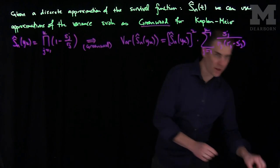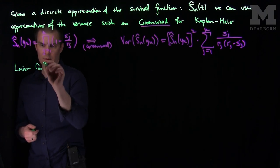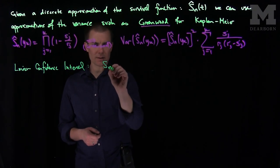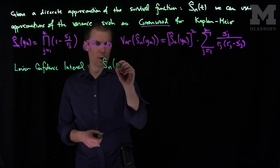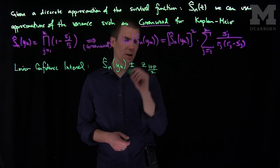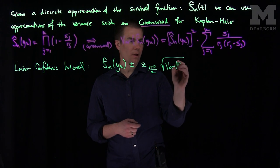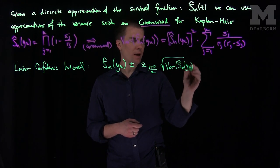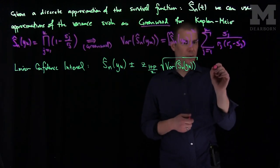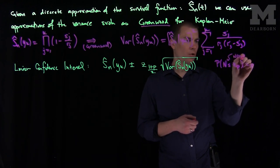From this variance estimate we can immediately construct a p confidence interval. The linear confidence interval will be Sn hat of yk, plus or minus z sub (1 plus p) over 2, times the square root of the variance of Sn hat of yk. That symmetrizes the confidence interval. Here the z-score is defined such that the probability that N is less than or equal to zp equals p, where N is a standard normal (0,1) random variable.